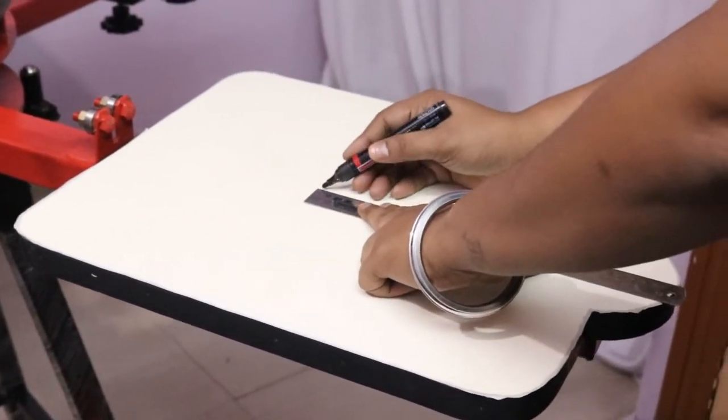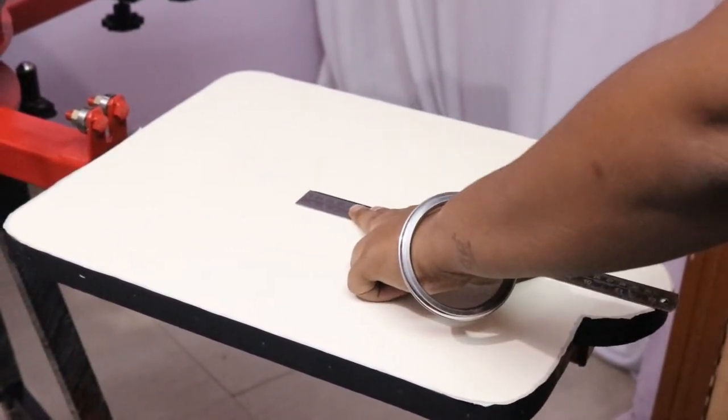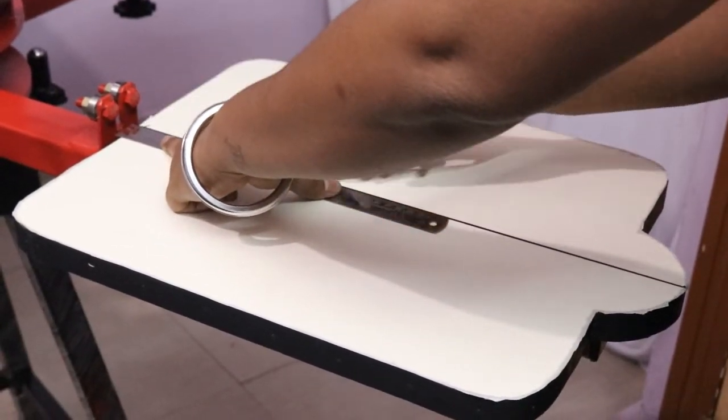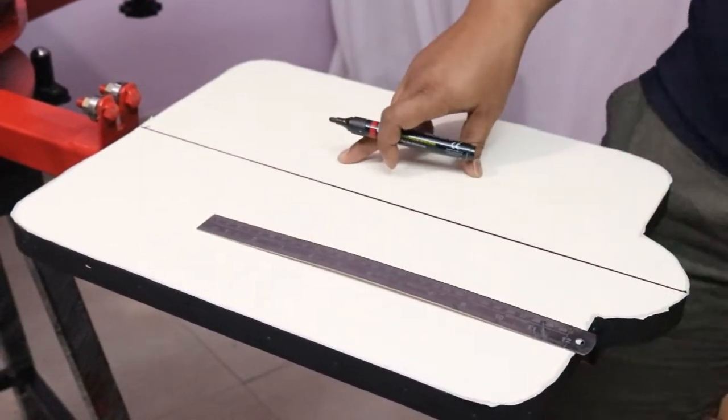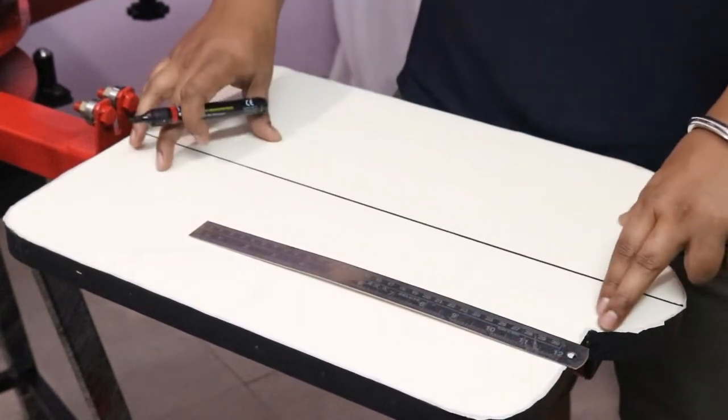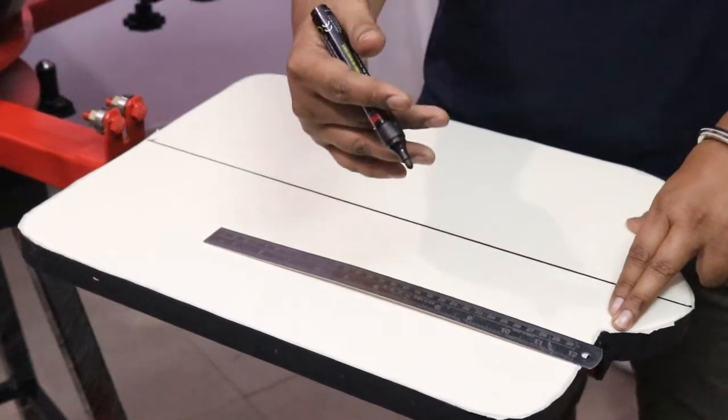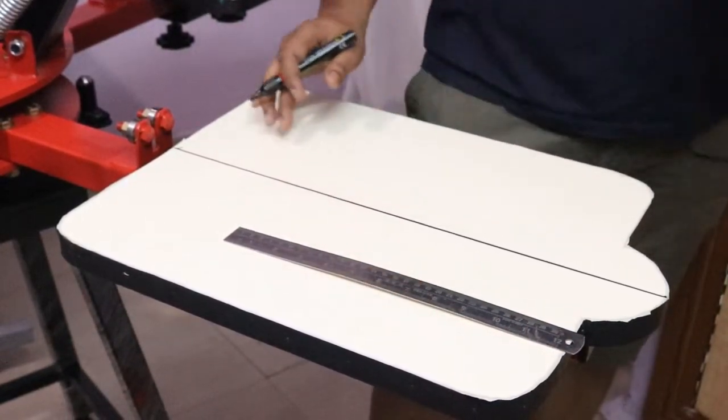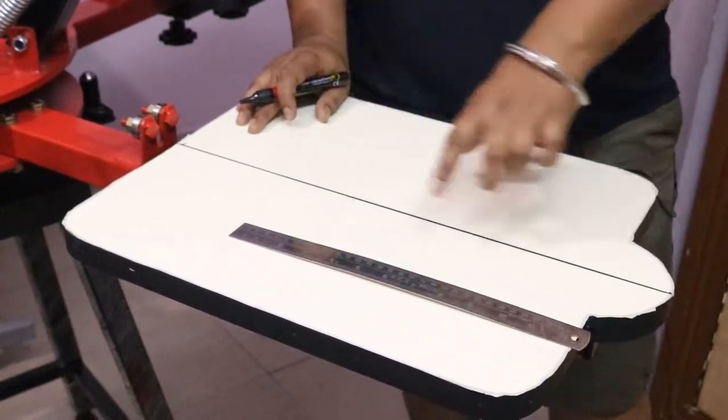First, you have to put one middle line. This is called a center line. This is the main thing. This center line should divide your design or print into two parts, so your design should be in the middle.